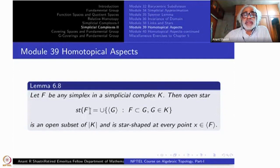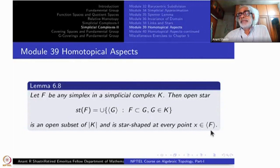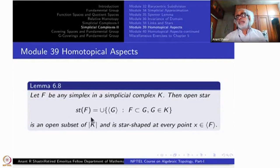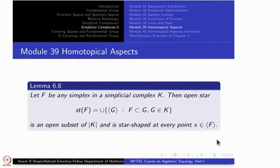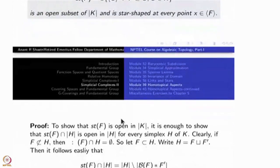The claim is that this is an open set. Just because we call it the open star, it may not automatically be open, so the claim is that it is an open subset of |K|. Furthermore, it is star-shaped at every point of the open simplex F. Notice that when you take G equal to F, the open simplex F is a subset of the open star. Now take any point there — the entire set will be star-shaped at that point. These are all easy to verify, not difficult, but you have to check them carefully.